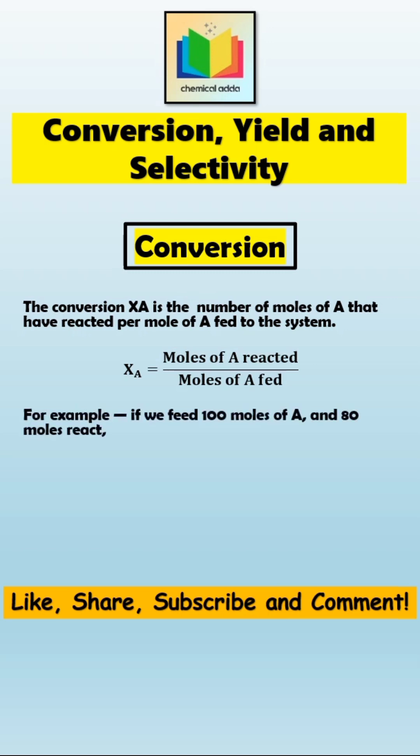For example, if we feed 100 moles of A and 80 moles react, then conversion can be calculated as 80 divided by 100, and hence we get 0.8 or 80% conversion. From that, we can say that 80% of A has reacted.